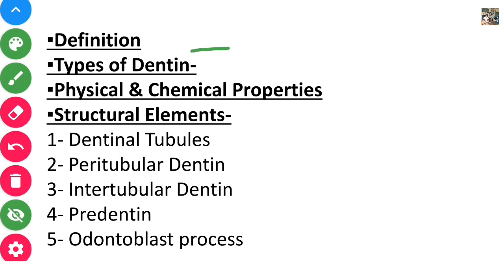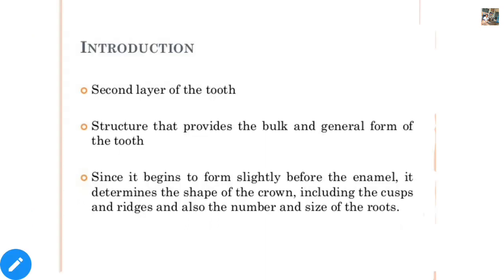So here we are going to study first of all the definition of dentine, types of dentine, and physical and chemical properties. Dentine is the mineralized connective tissue that surrounds the pulp.